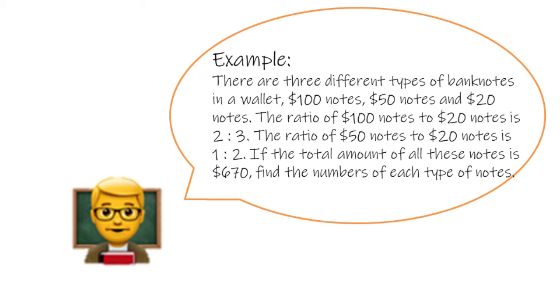Suppose there are three different types of banknotes in a wallet. $100 notes, $50 notes, and $20 notes. The ratio of $100 notes to $20 notes is 2 to 3. The ratio of $50 notes to $20 notes is 1 to 2. If the total amount of all these notes is $670, find the number of each type of notes.